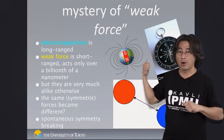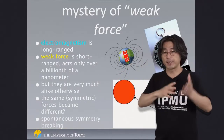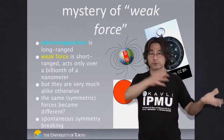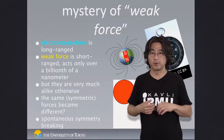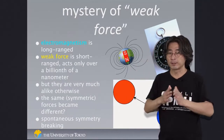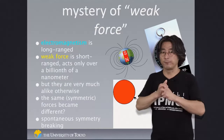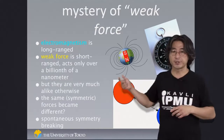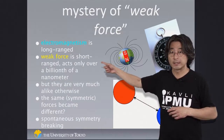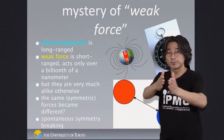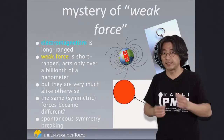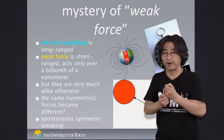But the weak force we just talked about — that can change a proton to a neutron and a neutron back to a proton — is an incredibly short-range force. The range of the force is actually only about a billionth of a nanometer, even smaller than the size of the nucleus.